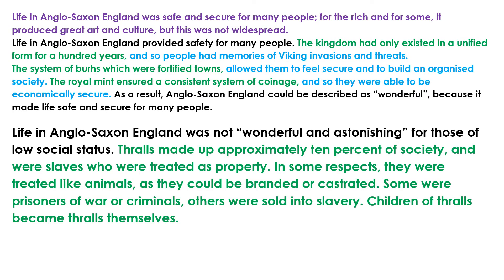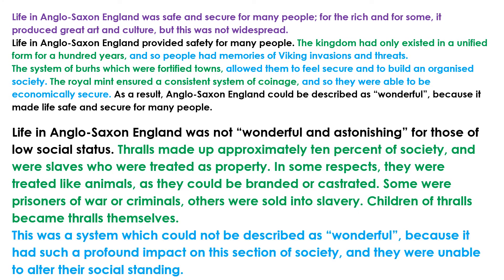Let's have a look at how that might expand further. On screen you can see the bit we've just read, plus one more. Life in Anglo-Saxon England was not wonderful and astonishing for those of low social status. Thralls made up approximately 10% of society and were slaves who were treated as property. In some respects they were treated like animals, as they could be branded or castrated. Some were prisoners of war or criminals; others were sold into slavery. Children of thralls became thralls themselves. This was a system which could not be described as wonderful, because it had such a profound impact on this section of society and they were unable to alter their social standing.